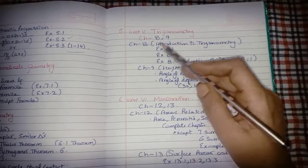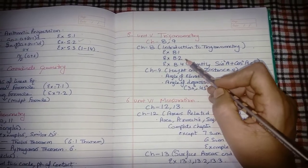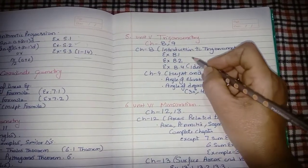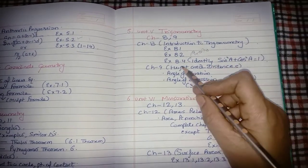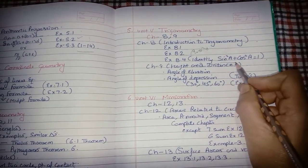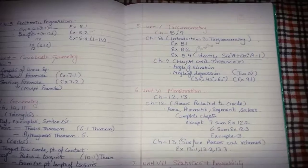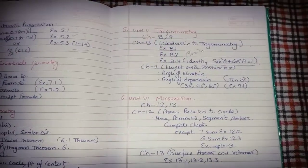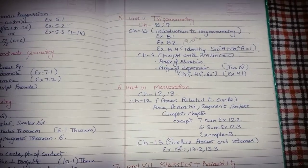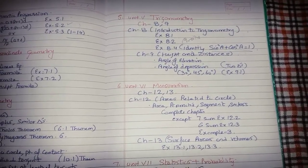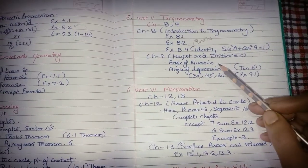Trigonometry covers chapters 8 and 9. For Chapter 8, Introduction to Trigonometry: do exercise 8.1. From exercise 8.4 (which is on 90°−θ), prepare only the sums using the identity sin²θ + cos²θ = 1. The other two identities have been deducted from the syllabus, so prepare only sums based on sin²θ + cos²θ = 1.